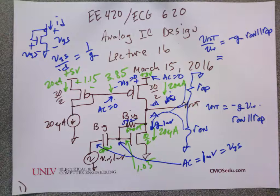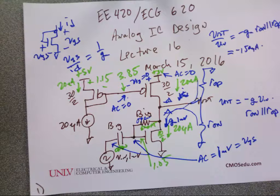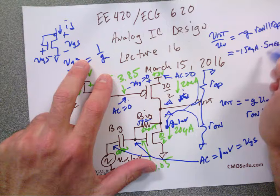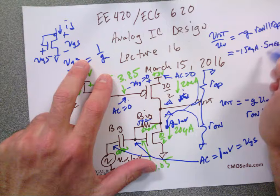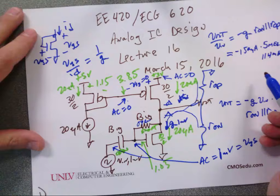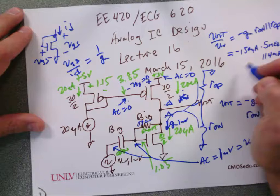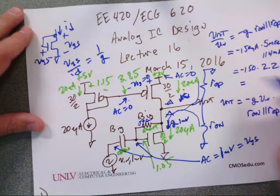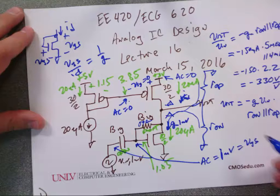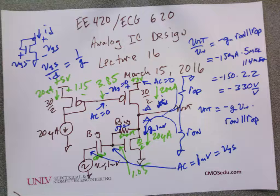Let's plug in the numbers. This is minus 150 micro times 5 meg in parallel with 4 meg. 4 meg in parallel with 5 meg is 20 divided by 9, which is roughly 2.2 meg. So that's equal to minus 150 times 2.2, and that equals minus 330 — volts per volt.